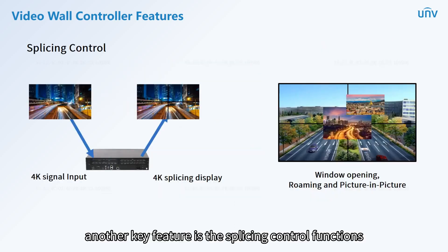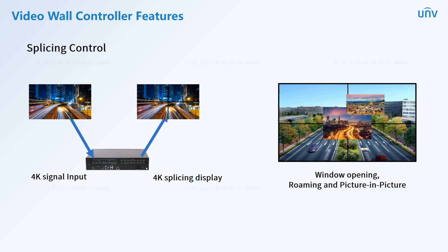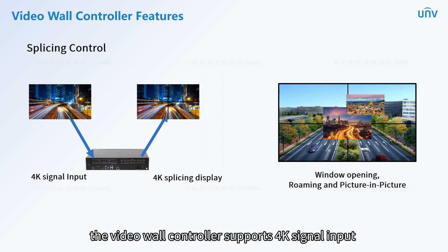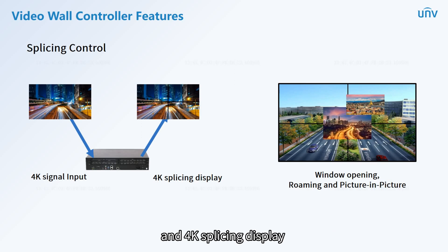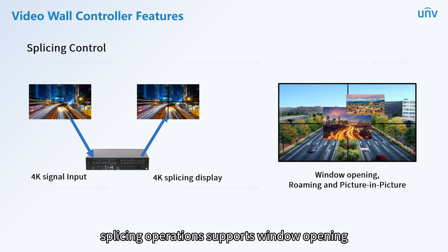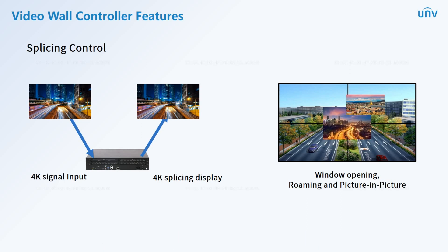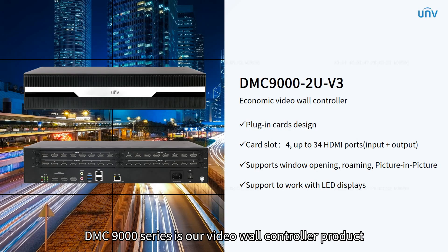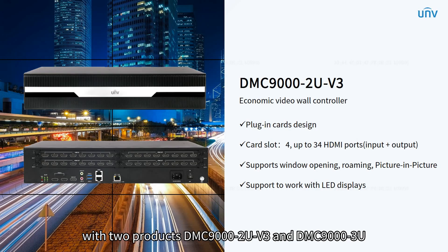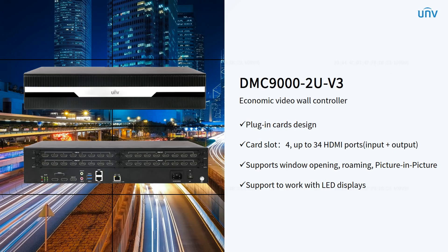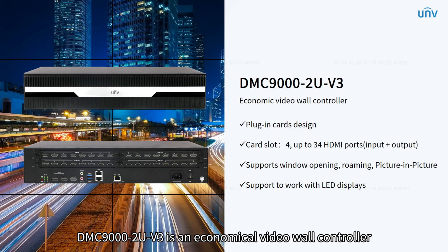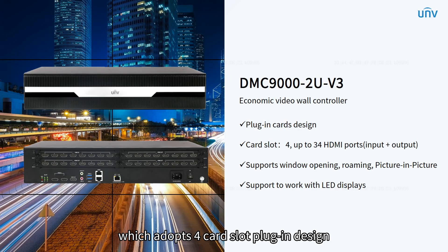Another key feature is the splicing control functions. The video wall controller supports 4K signal input and 4K splicing display, with splicing operations supporting window opening, roaming, and picture-in-picture. The DMC-9000 series has two products: DMC-9002U V3 and DMC-9003U. The DMC-9002U V3 is an economical video wall controller adopting a 4-card slot plug-in design.